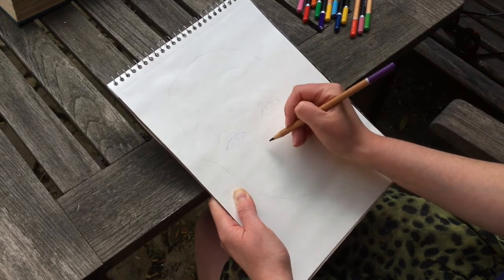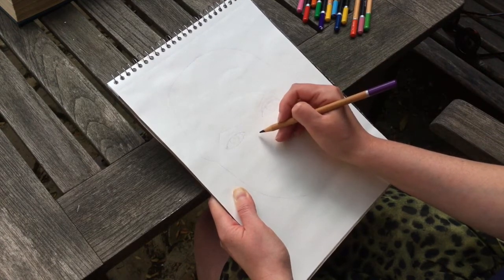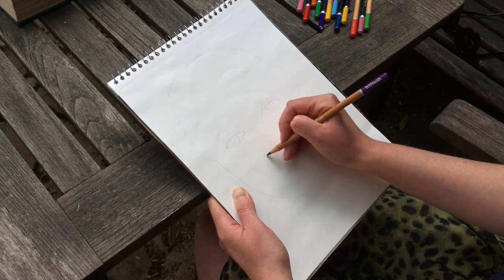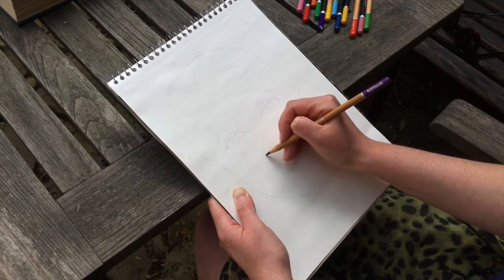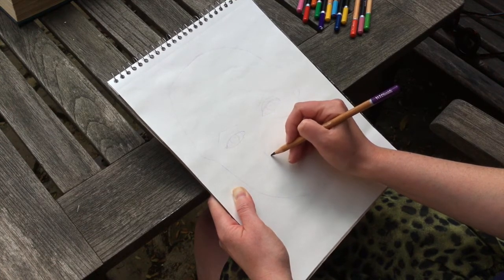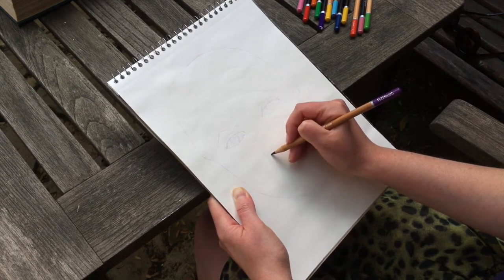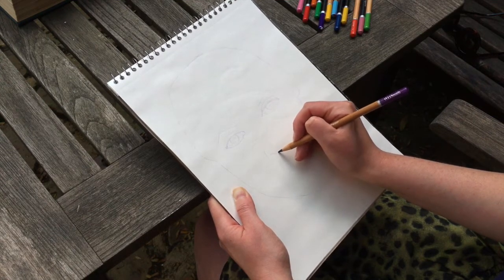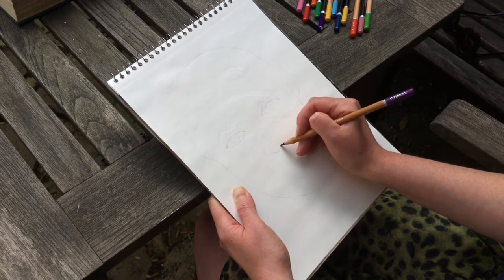And then step five, you want to drop down to draw the nose. And so you can check where the edge of the nose is in line with the eye. And think about how long your nose is. My nose is about, if you take the length of my eye, or how wide my eye is, you can probably fit about one and a half eyes in my nose.